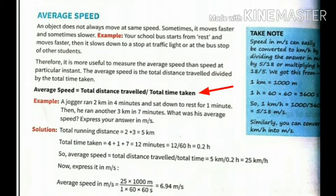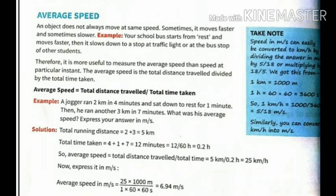So it is more useful to measure the average speed than the speed at a particular instant. So what is average speed? Average speed is the total distance traveled divided by the total time taken. This is the formula.